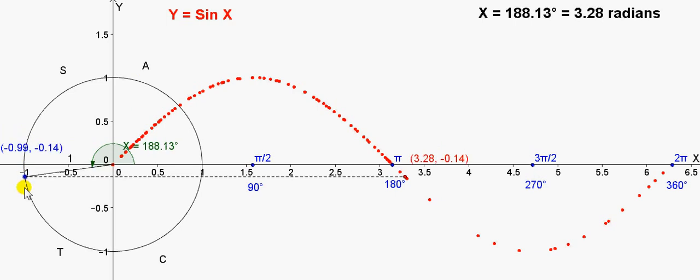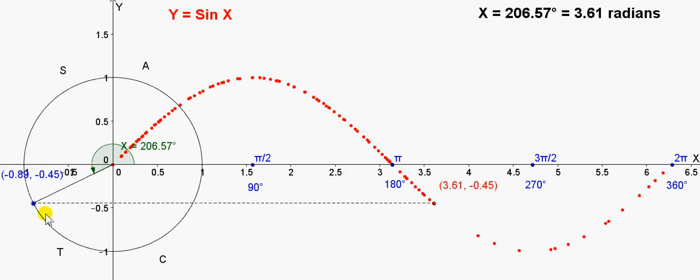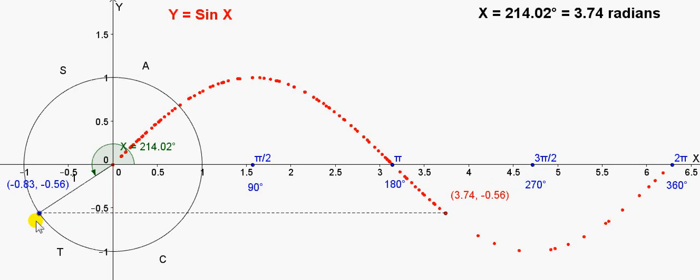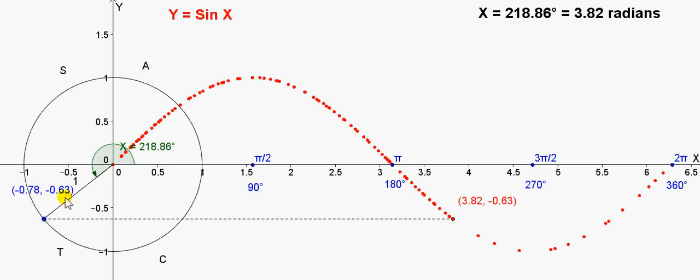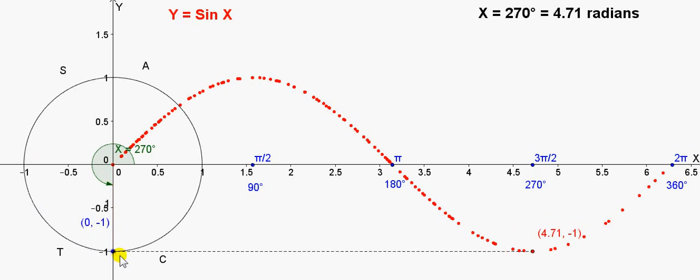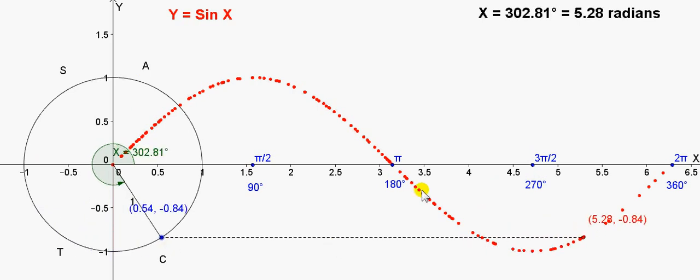However, when we get into the T quadrant, only the tan function is positive in here. That means the sin function is negative. And here's the value of sin of x. You can see for this particular angle, sin of x is minus 0.63. The sin function is negative in here in the T quadrant. It's also negative in the C quadrant. So, you can see that the graph of y equals sin of x is below the x-axis for angles between pi radians and 2 pi radians.